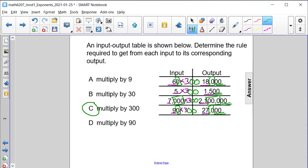So the correct answer here is C, multiply each input value by 300.